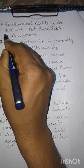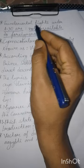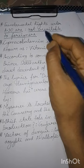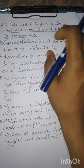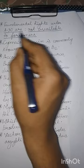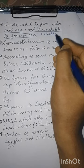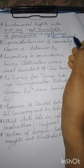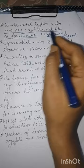Fundamental Rights under Article 30 are not available to foreigners. Most fundamental rights are available to both foreigners as well as citizens. लेकिन संविधान के अनुच्छेद 30 के अंतर्गत आने वाले सांस्कृतिक और शैक्षणिक अधिकार विदेशियों को प्राप्त नहीं होते हैं। So, the cultural and educational rights coming under Article 30 are not available to foreigners.